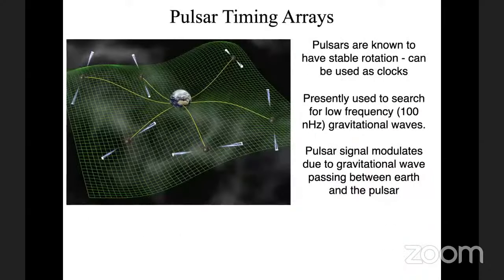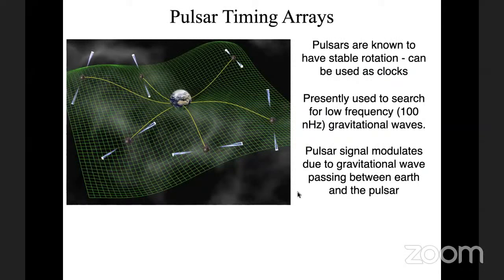Another activity with a lot of strength these days is pulsar timing arrays — experiments designed to search for gravitational waves, and there may even be rumors that they've recently found gravitational waves.